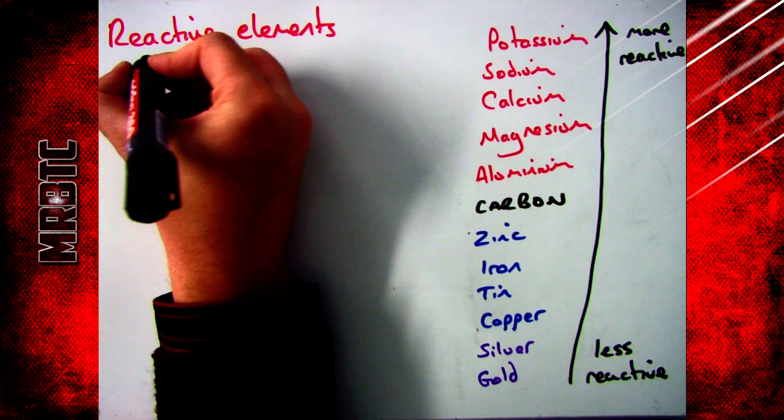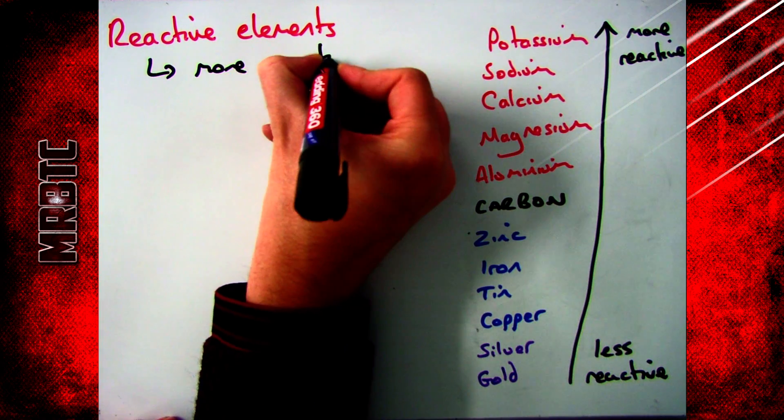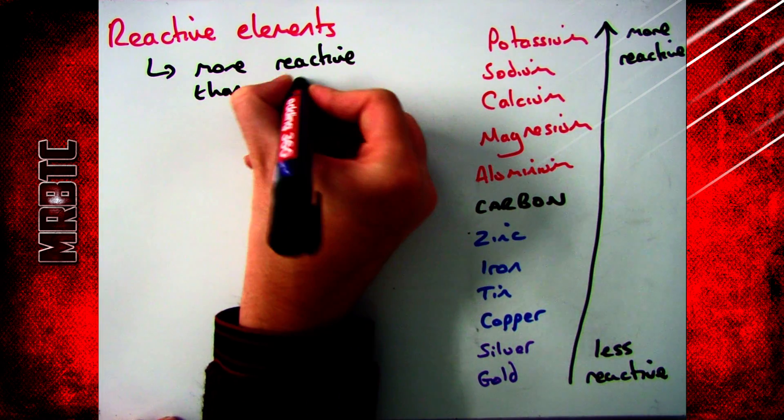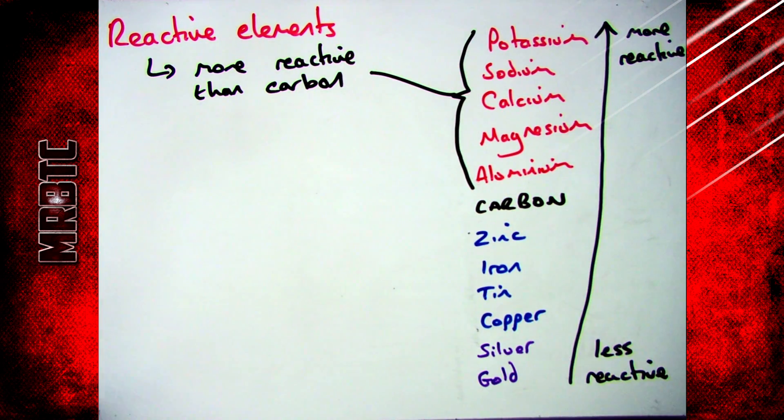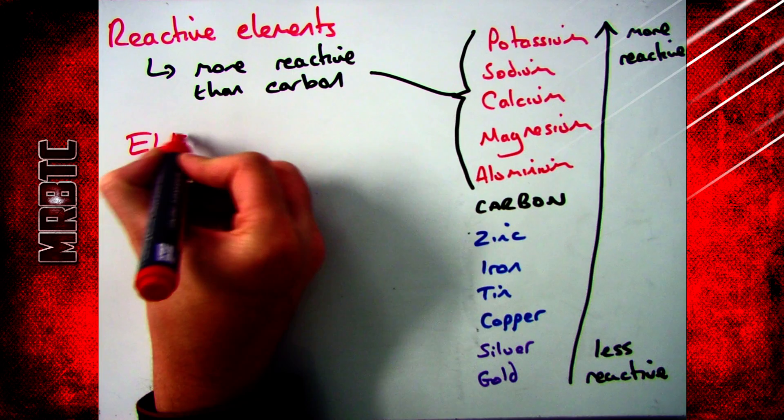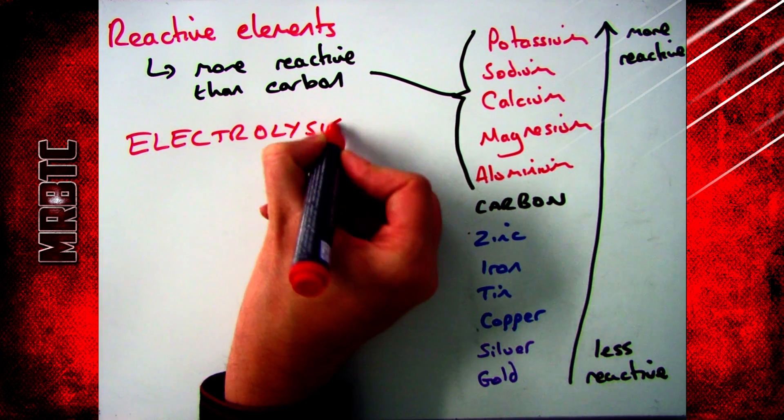That's how you can extract the less reactive elements. What about the reactive ones, the ones that are more reactive than carbon? You can't use carbon because it's not reactive enough, so you've got to use something else, and in that case that is electrolysis.